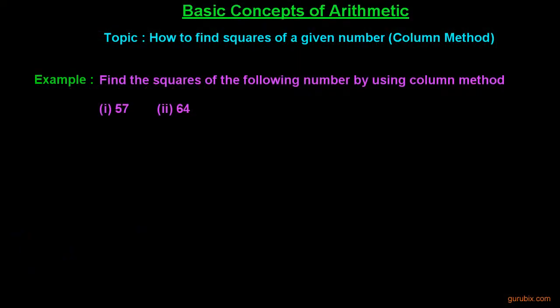Welcome friends. In this video we shall learn a very important method to find the squares of even numbers, and this method is called the column method. This method is based upon an old Indian method of multiplying two numbers, and it is convenient for finding squares of two-digit numbers only. As the number of digits increases, this method becomes difficult and time consuming, so we shall learn it only for two-digit numbers.